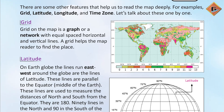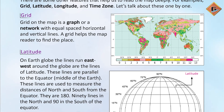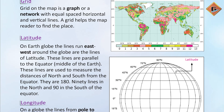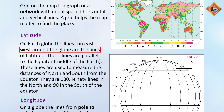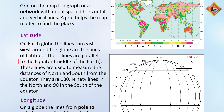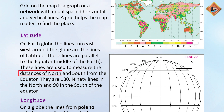Latitude: on a globe, the lines that run east to west around the globe are the lines of latitude. These lines are parallel to the equator, which is the middle of the earth. These lines are used to measure the distance north and south from the equator.